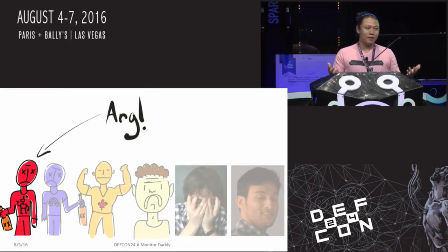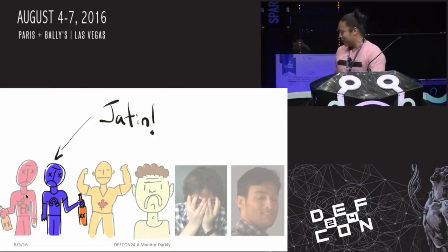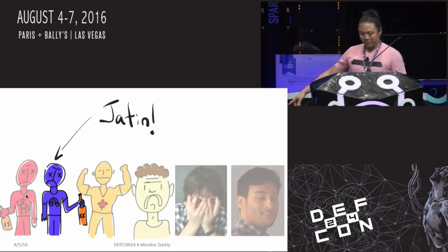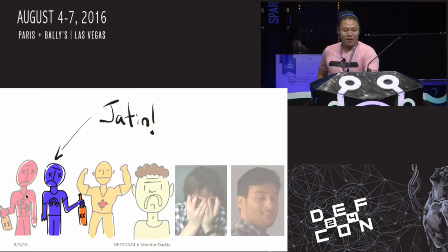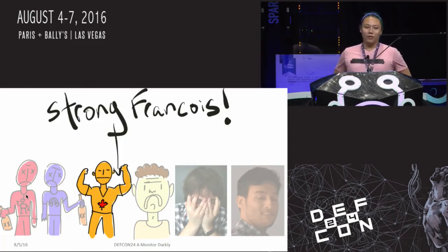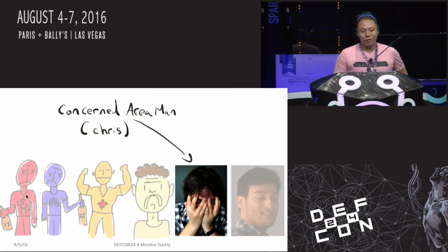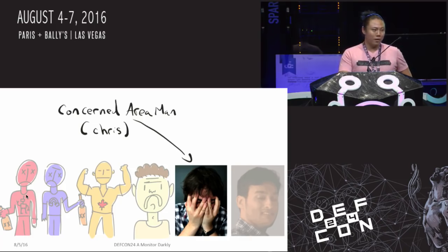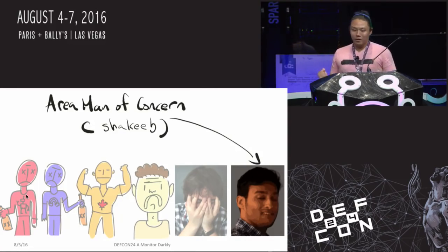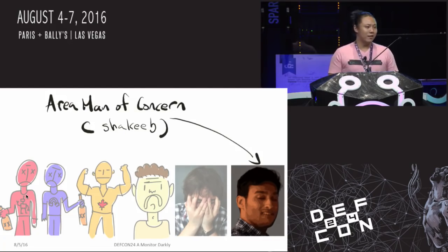We have a big cast of characters. My name is Ang. Jatin is underneath this table and will sometime reappear for this talk. We have a very strong Canadian named Francois who we worked with but couldn't show up. We have a person named Igor, a concerned area man named Chris, and last but definitely not least, an area man of concern named Shakib. If you see his face on your monitor, things are really going to be bad — and he's actually in the audience today, so watch out.